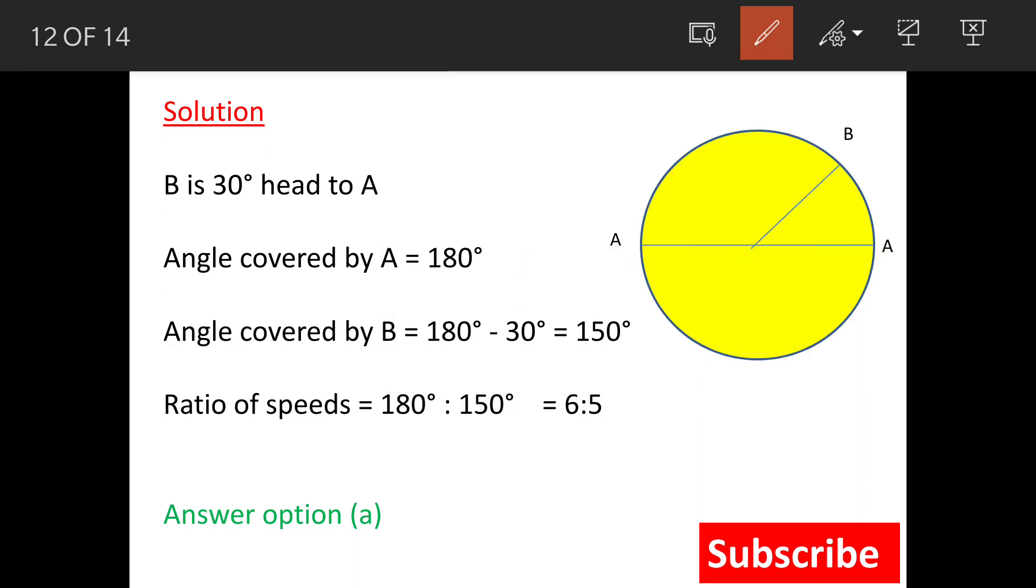Basically see, the ratio of speeds is going to be the ratio of angles. Now A has covered, because we don't have any other input, so A has covered an angle of 180 degrees here. And how much will B cover?